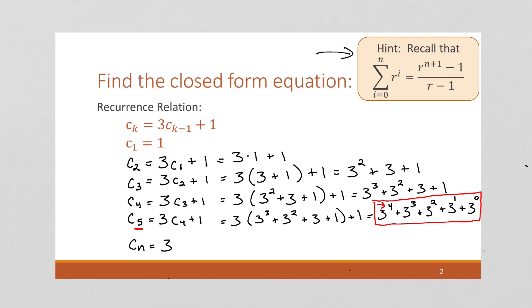So c to the n is going to be 3 to the n minus 1 plus 3 to the n minus 2 all the way down, so I'm going to give us 3 to the 1 plus 3 to the 1 plus 3 to the 0. And we're going to rewrite this and finish on the next page.